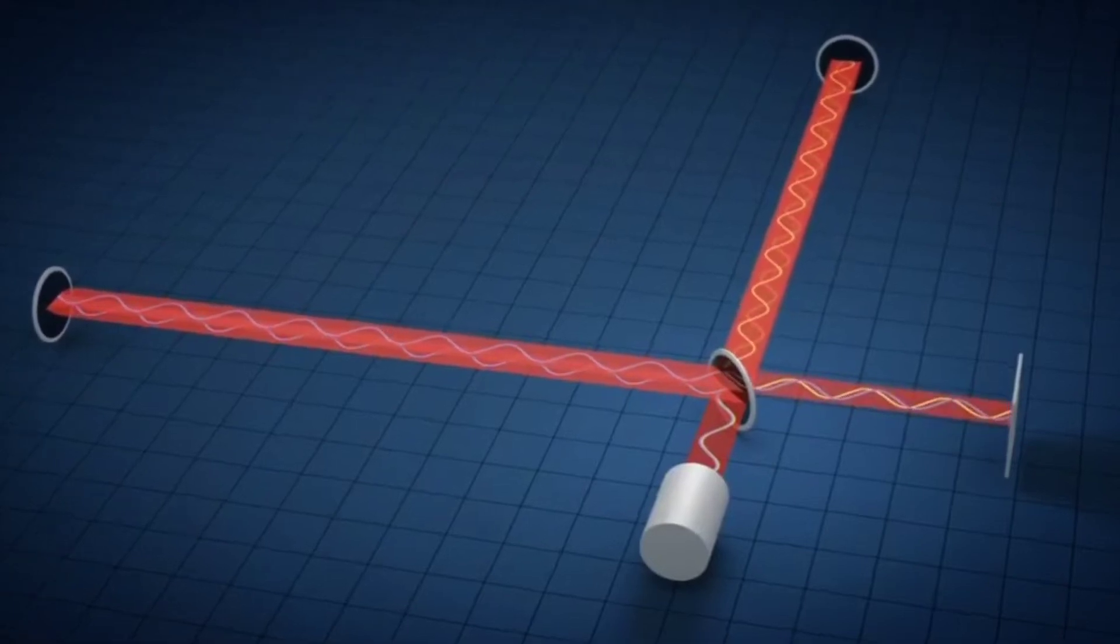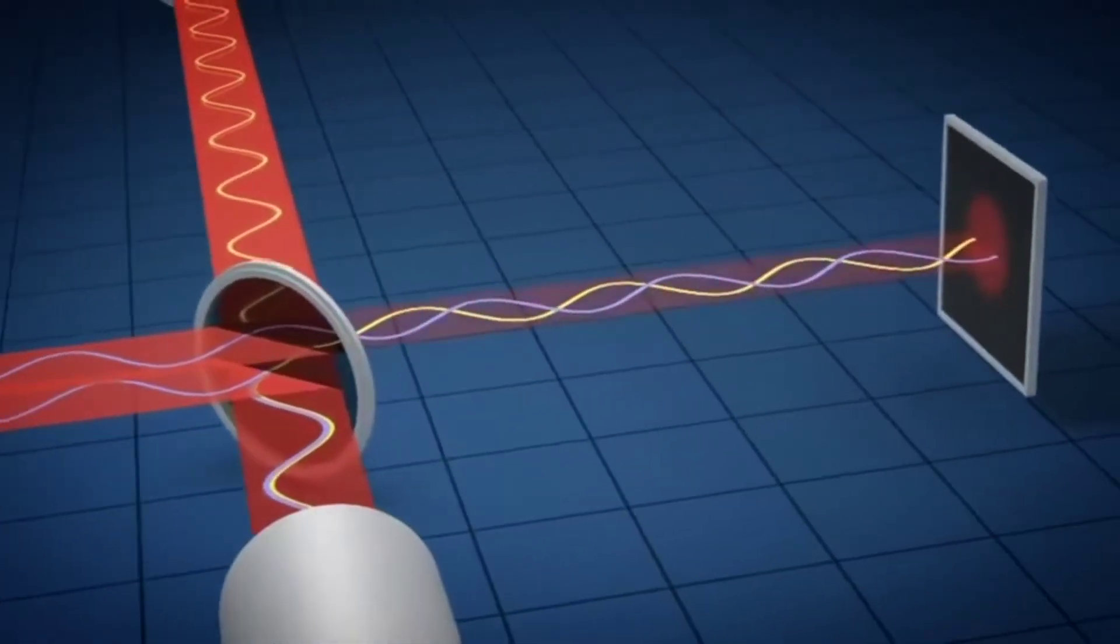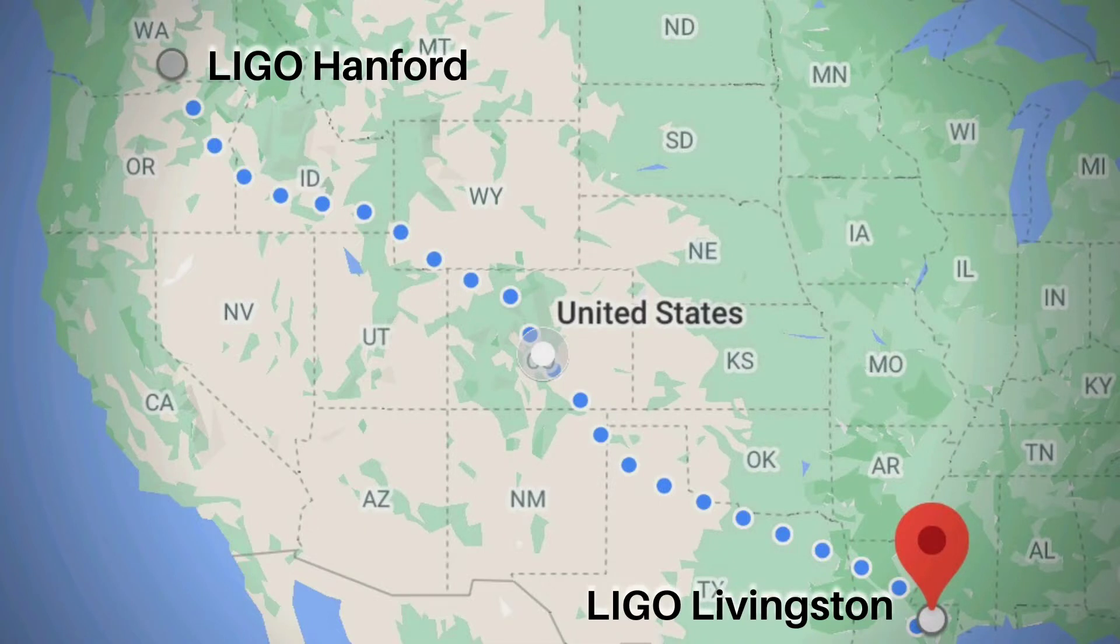which is measured by the interferometer. Both observatories are in two distinct areas on Earth. If a pattern of disturbance matches at both locations, a gravitational wave has been detected.